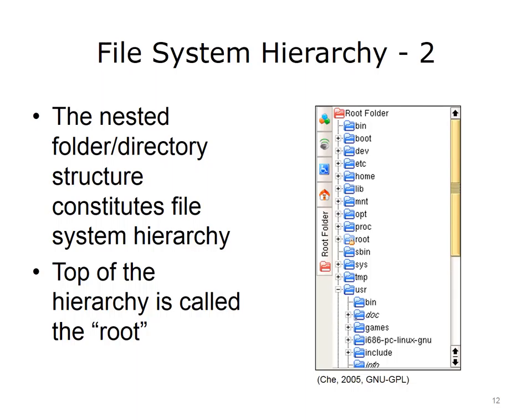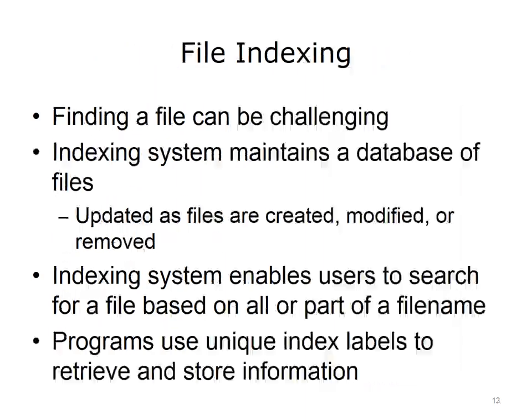This screenshot shows nested folders and subfolders and the tree-like structure that results. The top of the hierarchy is called the root. Due to the large volume of modern storage devices and the large number of stored files, finding a file can be challenging. Most file systems include an indexing system that enables users to search for a file based on all or part of a file name. The indexing system maintains a database that gets updated as files are created, modified, or removed. The indexing process is similar to file labeling in a file cabinet. Programs and databases use these unique index labels to retrieve and store information.